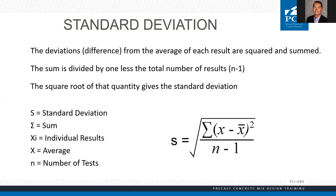Don't be intimidated by this — that's the equation for standard deviation. The deviations are the difference from the average of each of the individual test points, squared and summed. You'll have this presentation in PDF form. We're going to walk through this equation line by line. We start with the top line: sum of the individual results minus the average, squared.